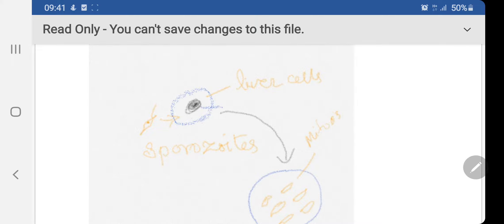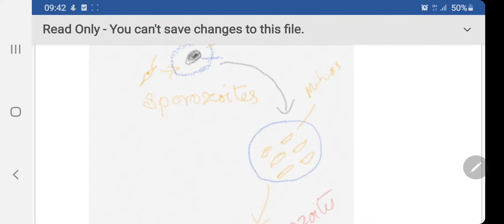As soon as the sporozoites, which are transmitted by the bite of the mosquito, enter the human body, they reach the liver cells, which are basically simple epithelial cells. When the sporozoites reach the liver cells through the bloodstream, most of them start dividing by the process of mitosis.